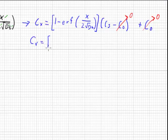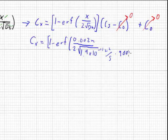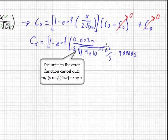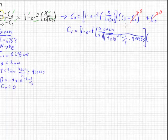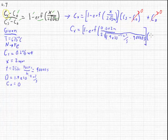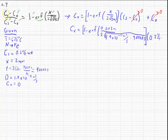Cx equals 1 minus the error function of x which is 0.002 meters, all over 2 times the square root of 1.9 times 10 to the negative 11th meters squared per second times 90,000 seconds. And all that's multiplied by simply the concentration at the surface is 0.2% by weight.